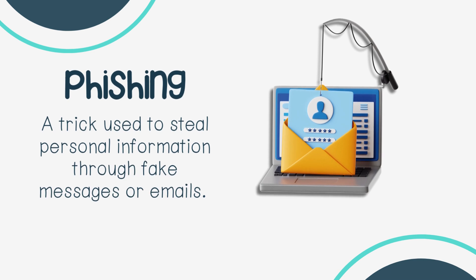Phishing: a trick used to steal personal information through fake messages or emails. For example, if you got an email from your school saying 'click here to reset your password,' but it's not really from your school — if you click the link and type your password, the scammer can steal your information. That's called phishing. Always double-check to make sure messages are real before you click them.